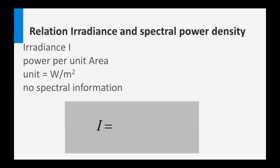Let's start with irradiance and spectral power density. Irradiance is a parameter which describes power per unit area, so the unit is watt per square meter. It tells us how much energy in a certain time per area is incident on a surface. Note that this parameter has no spectral information. So if I have an irradiance of 500 watts per square meter, I don't know whether this is focused on the blue spectral part, the red, or the infrared. Irradiance only gives the power per unit area.